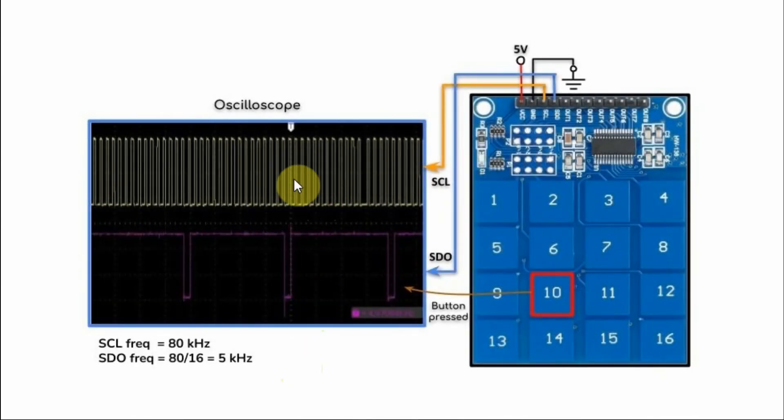Inside the loop, we need to send a logic 0 to the serial clock line to enable the output of the SDO.